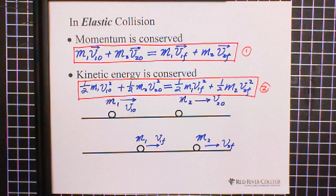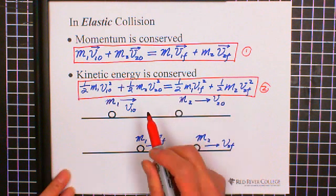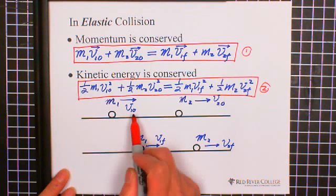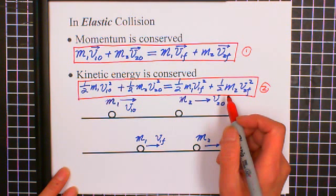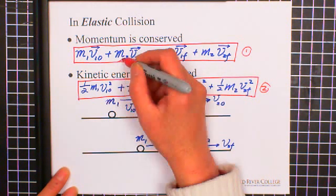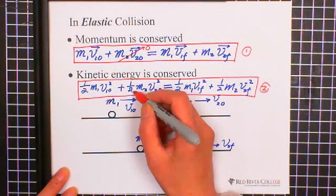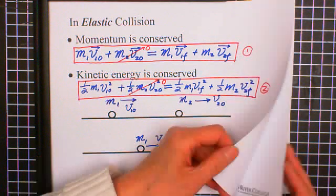For the following example, I just make it a little bit simple by assuming the second object is stationary. So that means the first object collides with the second object, but the second object initially is at rest. So V2 initial equals zero. So that's why this one equals zero and this one equals zero. So we can solve these two equations to get a general formula.